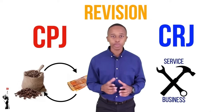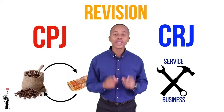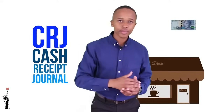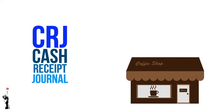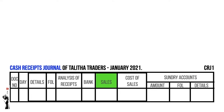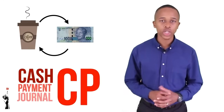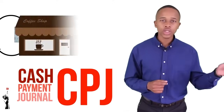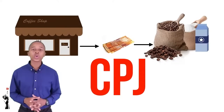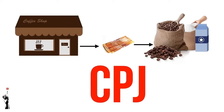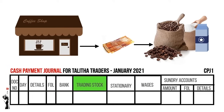Can you remember how the CPJ and the CRJ differ for the trading business versus the service business? We looked at this in Grade 8. All the money that the business receives is recorded on the CRJ. There will be a sales column in the CRJ of a trading business, as well as a cost of sales column — cost of sales being the cost price of the trading stock that has been sold. For the CPJ, money leaves the business when the business pays for something. There will be a trading stock column added to the CPJ of a trading business.